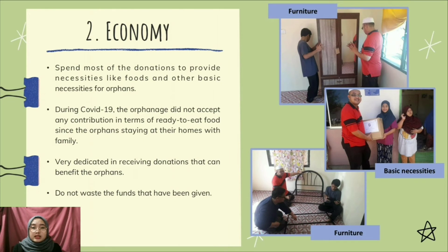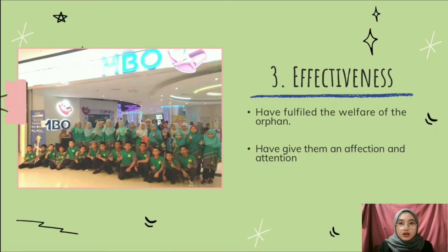From this, we can see that the organization does not waste the funds given by people — they fully utilize them by giving orphans what they need. Next is effectiveness. For this evaluation, we need to see whether Roma Anak Yatin Asakina has achieved the objectives of the organization. By looking at the efficiency and economy measurements, we can say that the organization has achieved their objective.